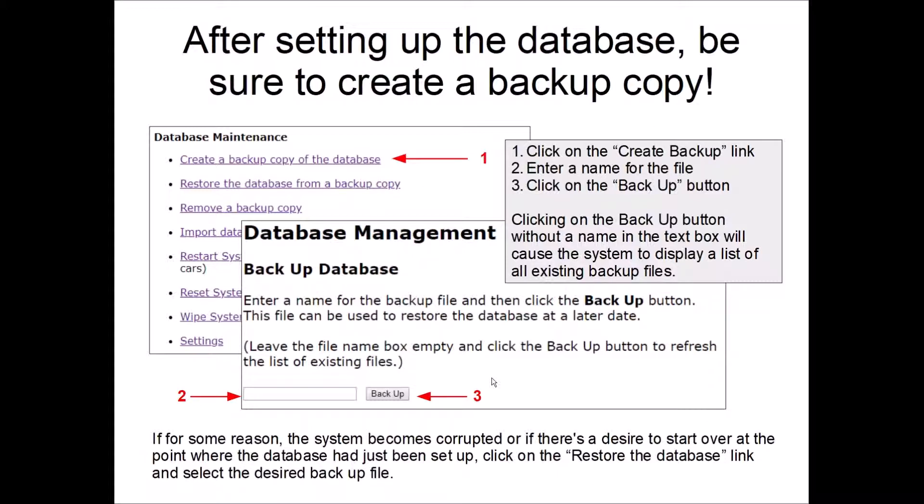So in order to do that, we go to the Database Maintenance section, click on Create a Backup Copy, enter a name. I normally put in the name of the railroad and then the date that I made the backup. And then click the Backup button.